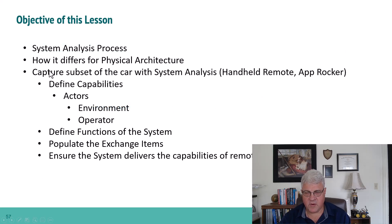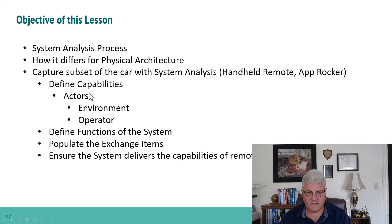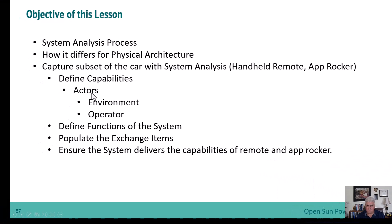We're going to talk about the system analysis process and how it differs from the physical architecture. We're going to capture a subset of the car with system analysis, focusing on the handheld remote and app rocker. We're going to define the capabilities of this system with respect to the handheld remote and app rocker, including the actors, the environment, and the operator. We're going to define the functions of the system and of the actors, populate some exchange items, and ensure that the system delivers the capability of the remote and app rocker by using the functional chains.